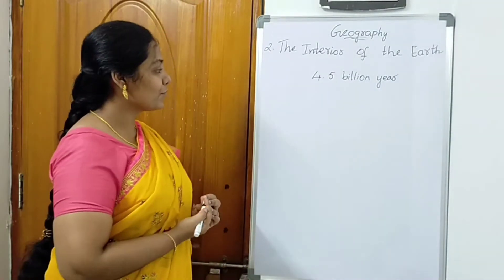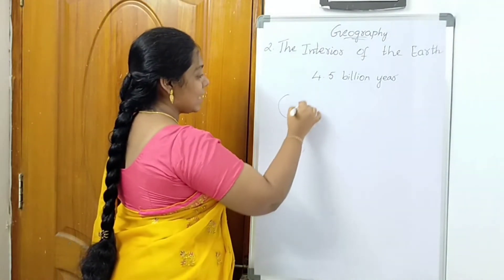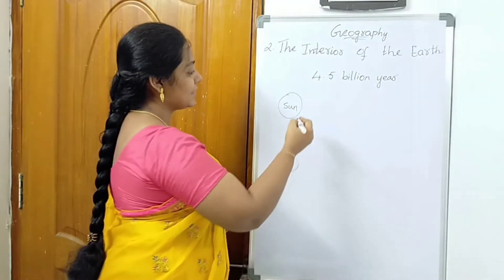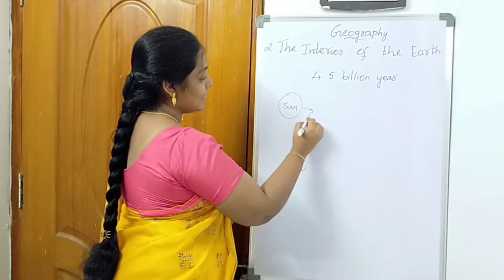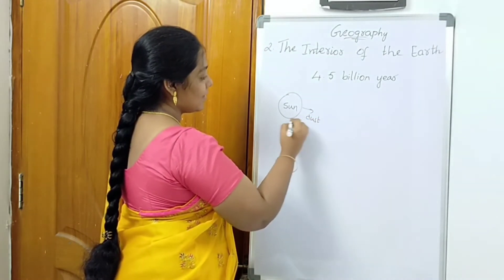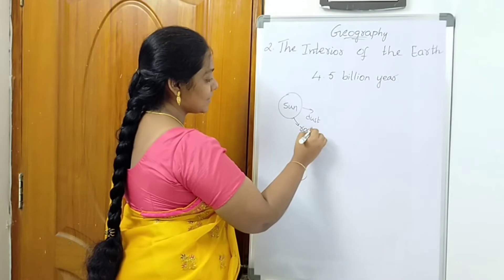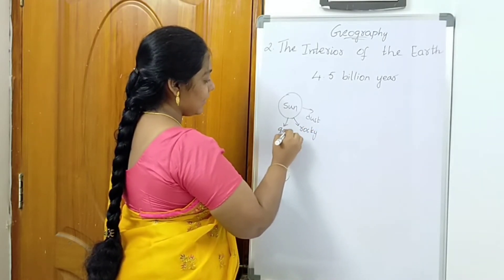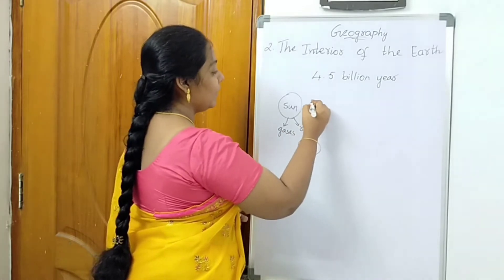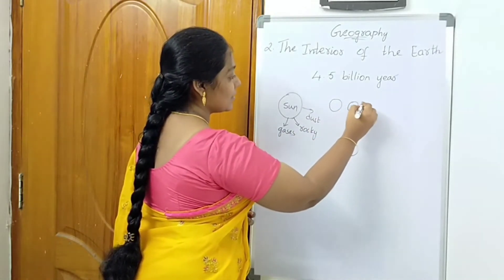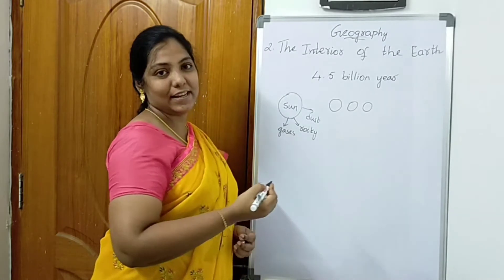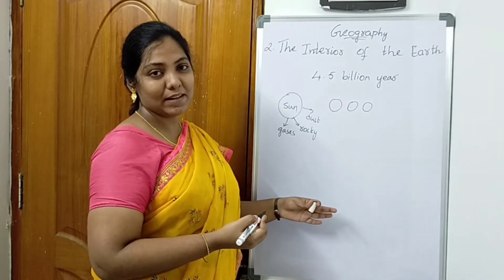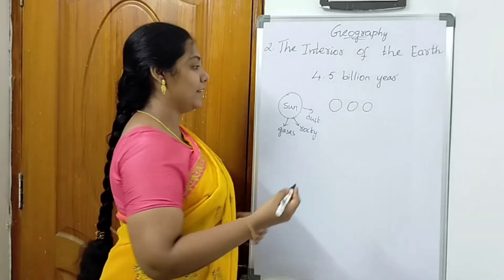The earth is formed from the sun. When the sun is formed, the remaining particles like dust, rocky particles, and gases were released, forming the planets. Originally nine planets, but they have removed one — the last planet, Pluto — and right now we are having only eight planets.